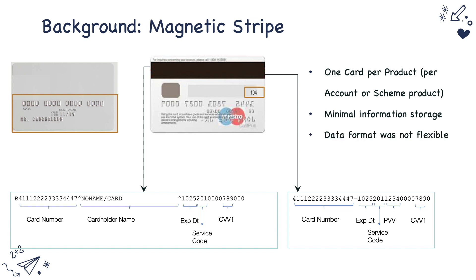The data format of the magnetic stripe is not flexible. If you look at the track format, the data is separated using a caret symbol or an equals symbol. Both the terminal and the card issuers need to agree on a format, which makes magnetic stripe cards less interoperable. Once the card is issued, the data on the card cannot be updated.